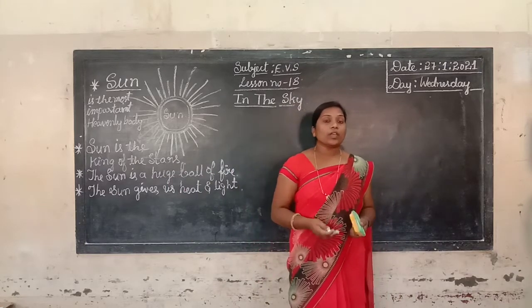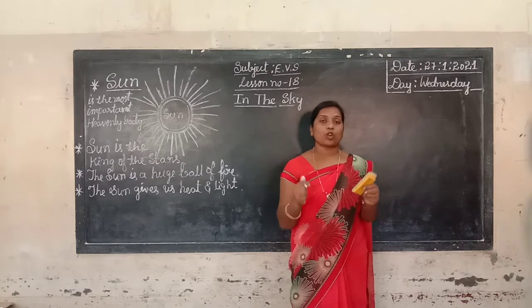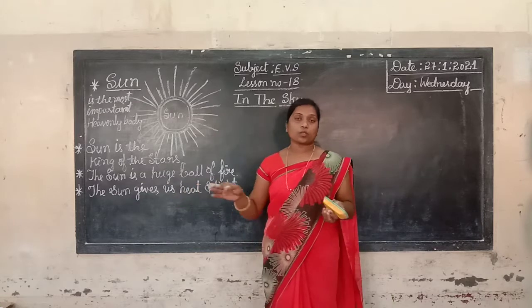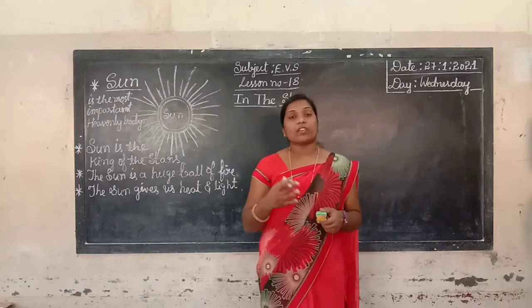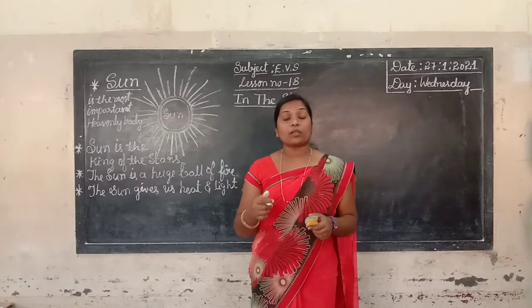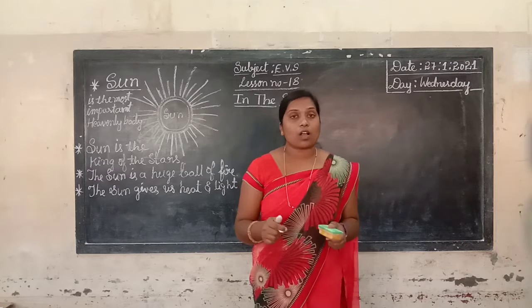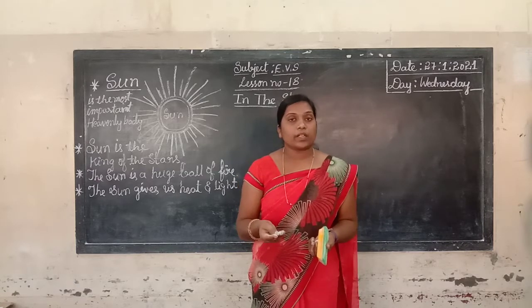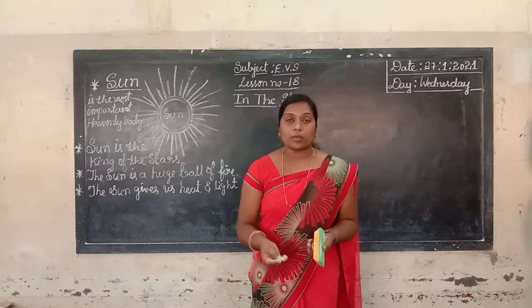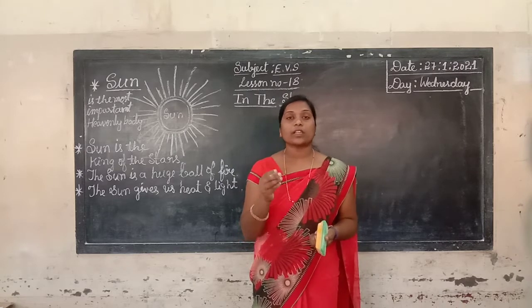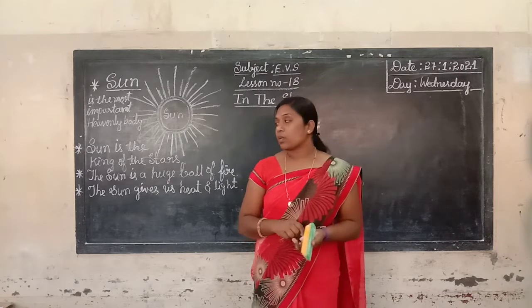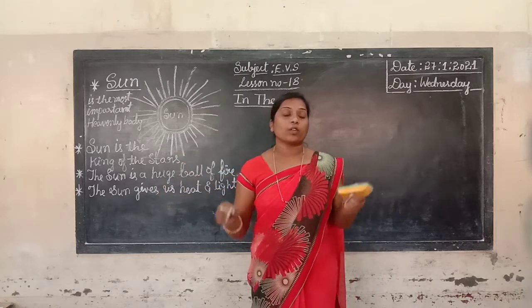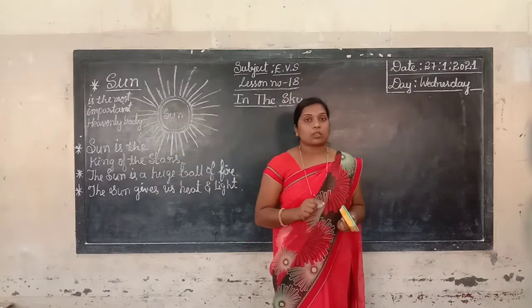This heat and light helps all living things to live and grow and become strong. Plants also need heat and light. Animals and human beings also need heat and light. That's why the sun's heat and light is very important to all living beings.